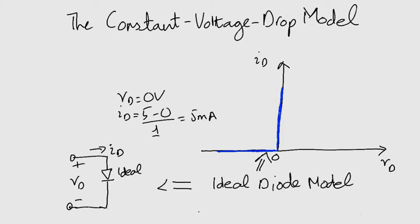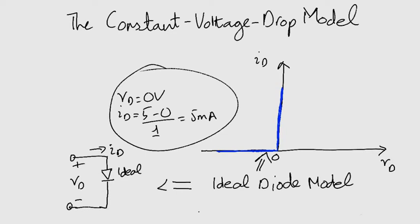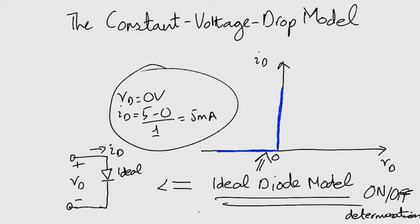It can be argued that the constant voltage drop model would not increase the work involved in solving this, and that would be a correct argument. This approach is rather more useful when you want to look at which diodes will be on and off in a multi-diode circuit. Otherwise, the constant voltage drop model is good.